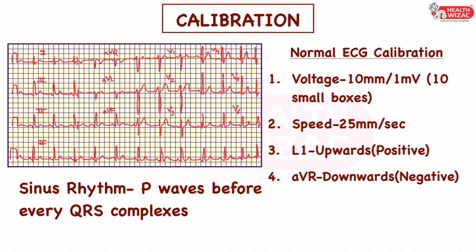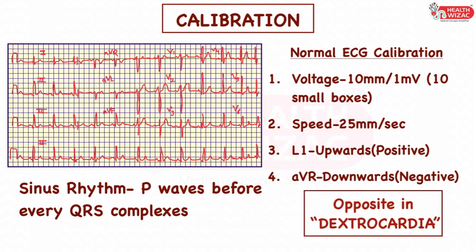Calibration or standardization are a set of parameters that should be checked as soon as we hold the ECG in hand. Voltage of ECG should be 10 mm or 1 mV, which corresponds to 2 big squares or 10 small squares of ECG. Speed of the paper should be 25 mm per second. L1 is usually upright or towards the positive side, whereas AVR is downward or towards the negative side, but this may be inverted in case of dextrocardia.